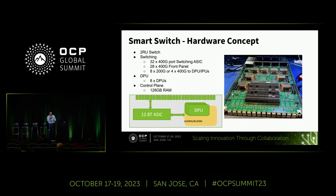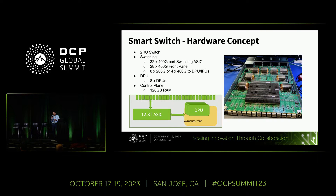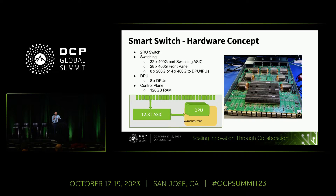This is the hardware concept. We are proposing a two RU switch which hosts a 32 by 400 gig switching ASIC and then eight DPUs. We can use 28 400 gig front panel ports which can be connected to the peer devices, and then an internal 4 by 400 to the hosted DPUs. With the scalability and performance requirement, we are considering at least 128 gigabit of RAM on the control plane.